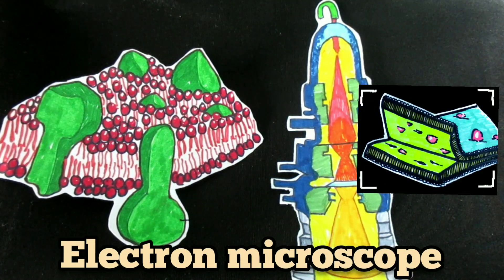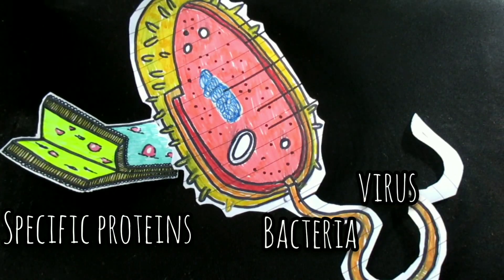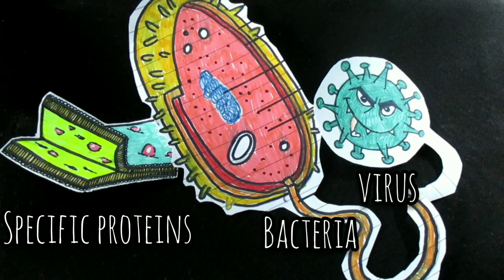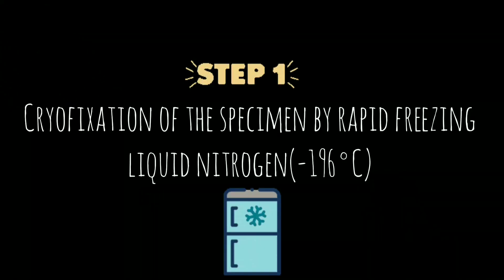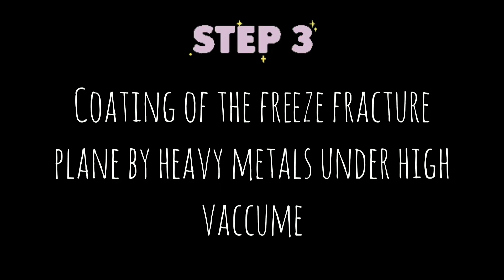This method is beneficial for the visualization and detailed analysis of the function of specific proteins, bacteria, and viruses. Using liquid nitrogen, biological tissue samples or cells are rapidly frozen to immobilize cell constituents. The sample is then cracked on a plane through the tissue by cleaving it with a microtome knife. This fracture occurs along weak portions of the tissue, as the hydrophobic lipid tails are the weakest point.